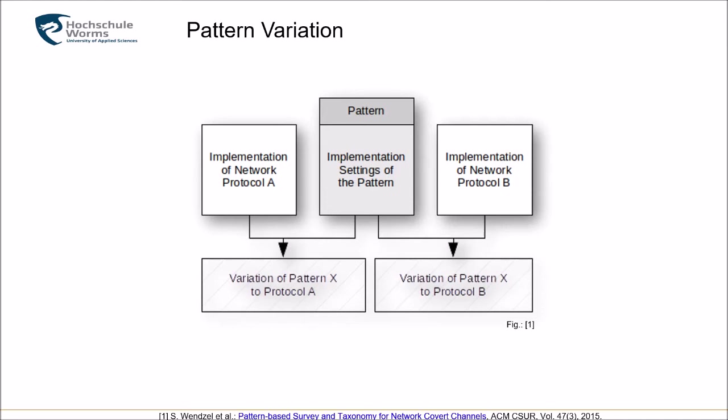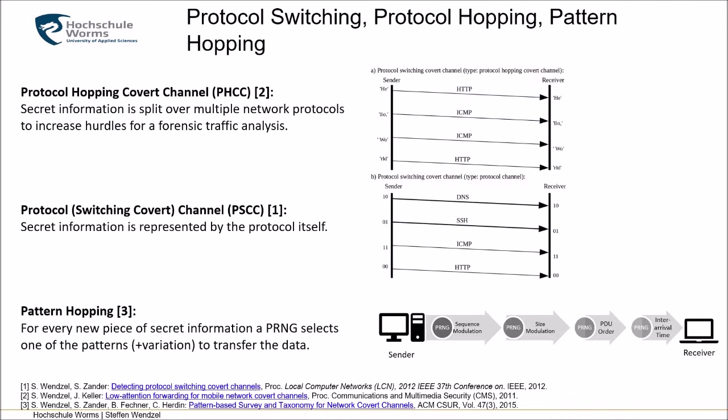What we would need is the size of the header field, the location in the header — the offset from the start of the header — and things like byte order. Then we can simply apply one pattern from one protocol to another. This is how pattern variation works, and it allows us to switch between protocols.